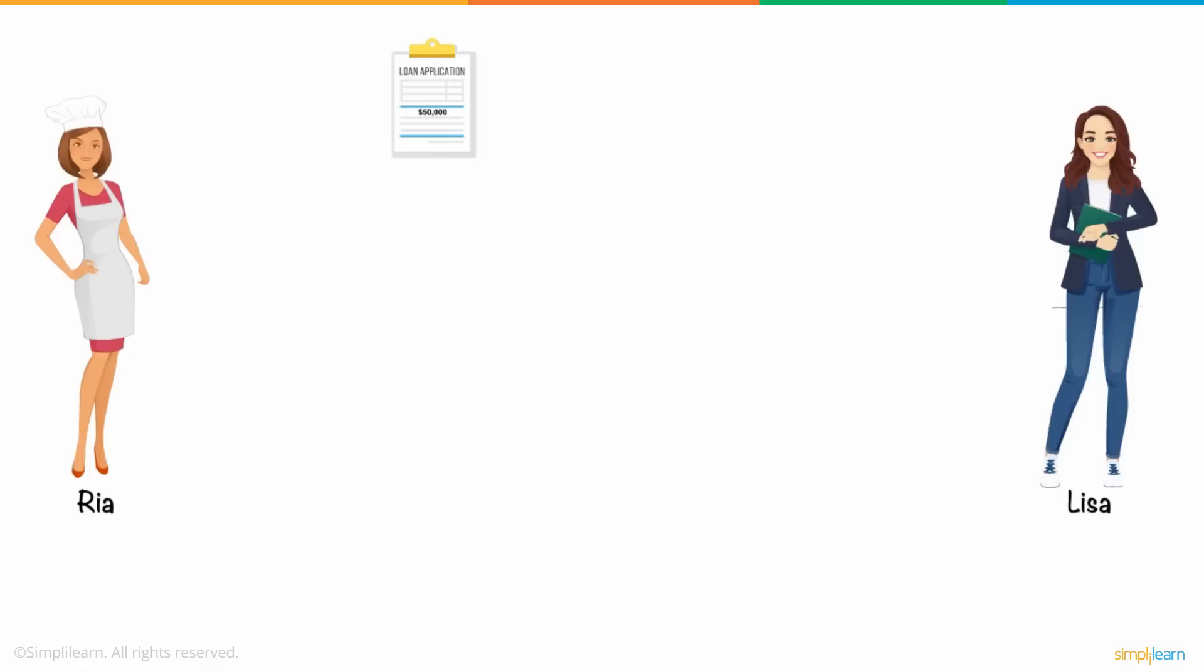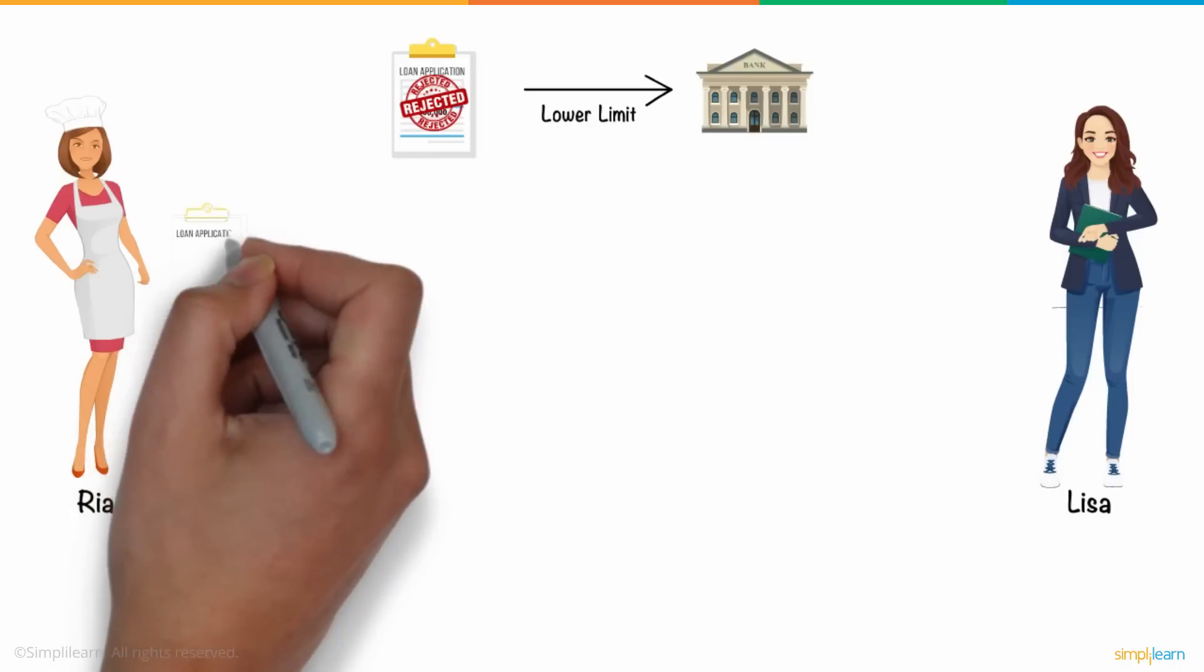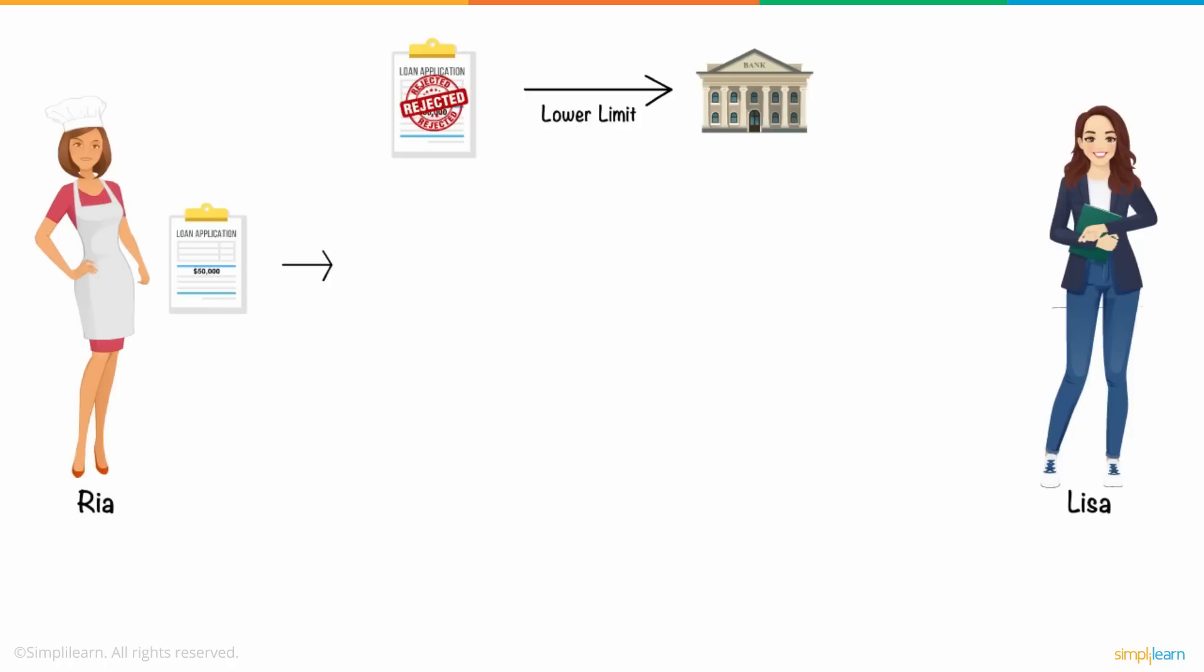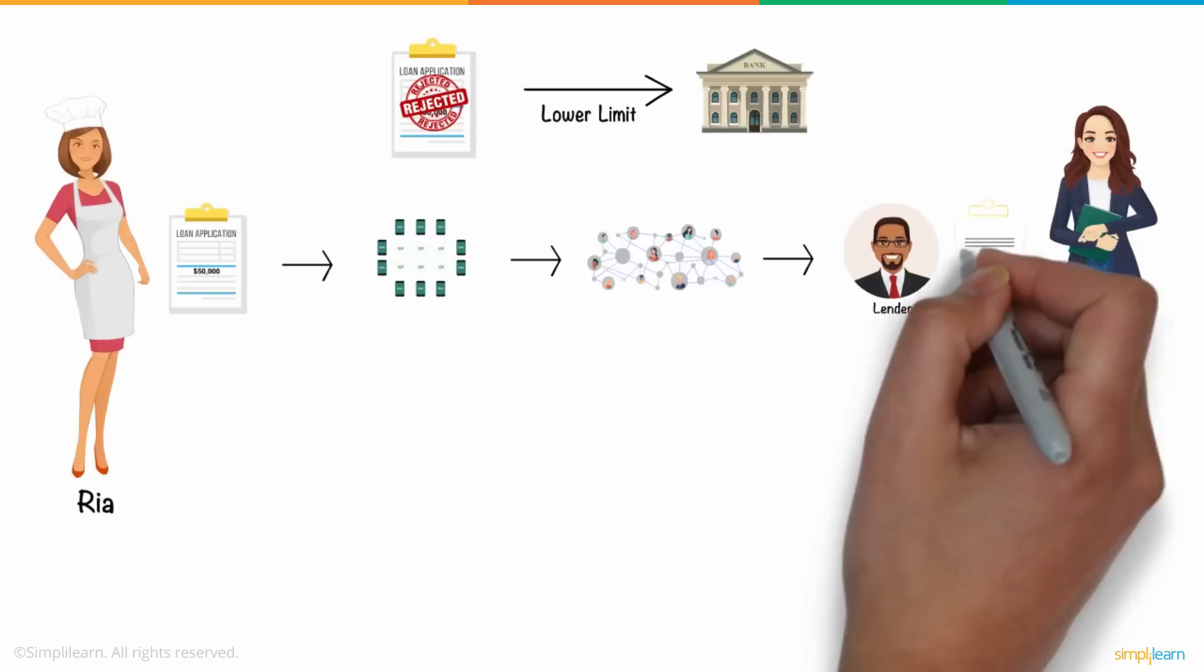Lisa further explained that Ria's loan got rejected due to the lower limit by the centralized financial system. But in DeFi, she can submit her loan requirements into a decentralized finance application, dApp. And an algorithm would match her up with peers who could help her. After that, she'll have to agree to the lender's terms to get her loan.